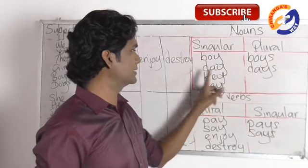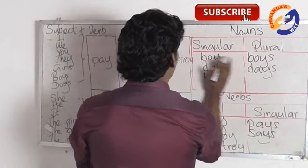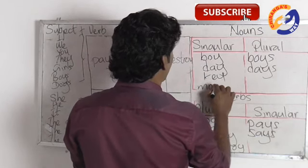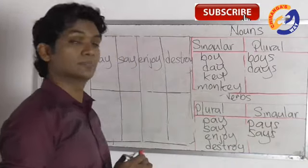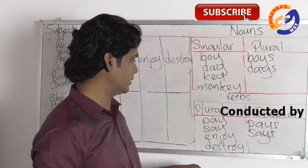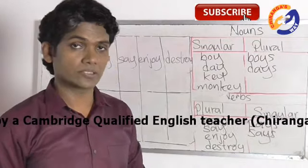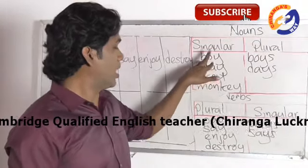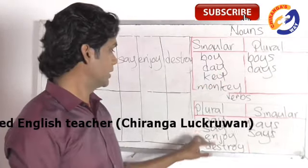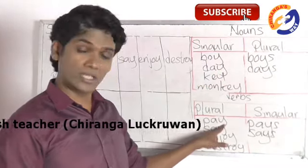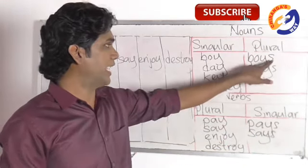For example: boy → boys, day → days, monkey → monkeys, baby → stays, stay → stays, enjoy → enjoys, destroy → destroys. What's the rule? When a word ends in Y with a vowel before it, we simply add S — to make a noun plural or to make the verb singular form.